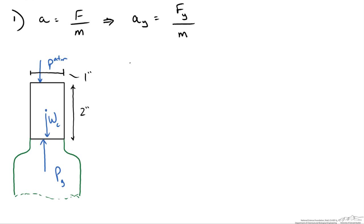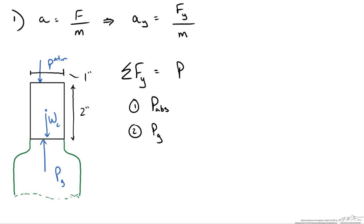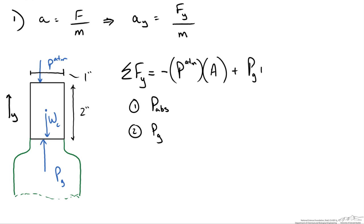To calculate our overall force in the y direction we look at the summation of forces in the y direction. We can do this using either absolute pressure or gauge pressure. The absolute pressure acting on the top surface is atmospheric pressure, so pressure times area gives our force — acting downwards, so it is negative. Adding the positive force due to the pressure inside the bottle, we use gauge pressure plus atmospheric to get absolute pressure.